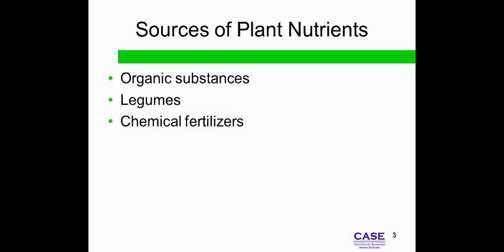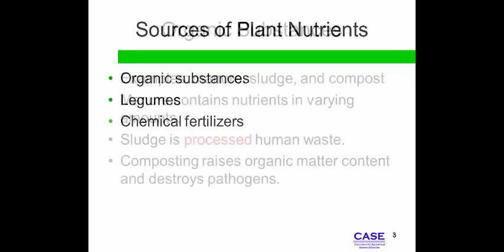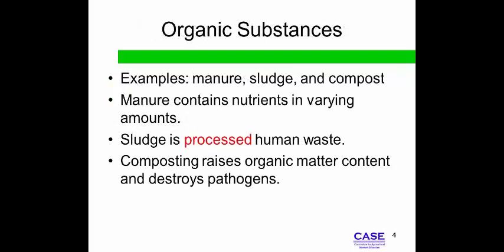Chemical fertilizers such as anhydrous ammonia, urea, and liquid nitrogen are manufactured synthetically. Chemical fertilizers are often more uniform in nutrient value. The nutrient analysis of organic substances can vary greatly from one batch to another.